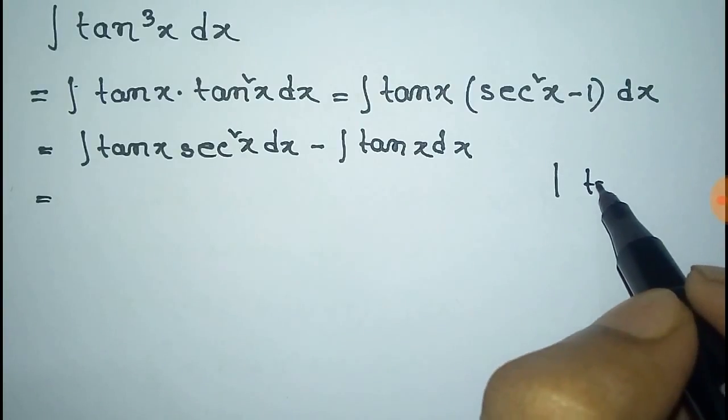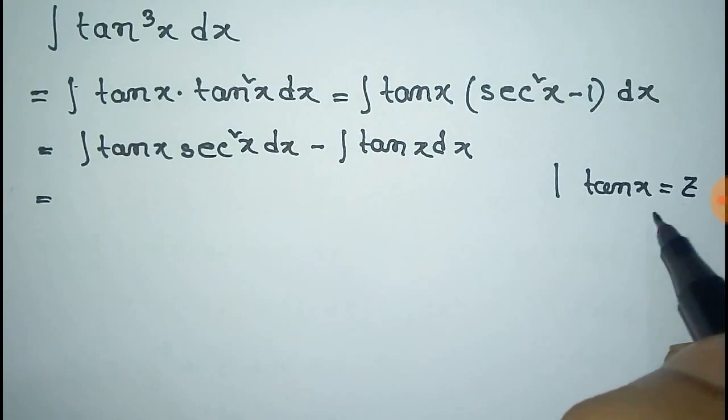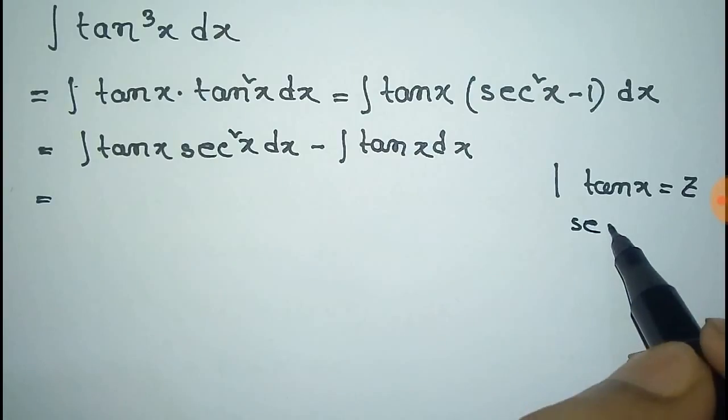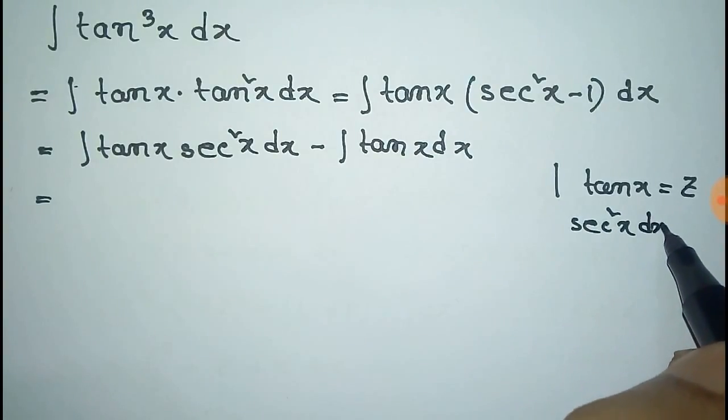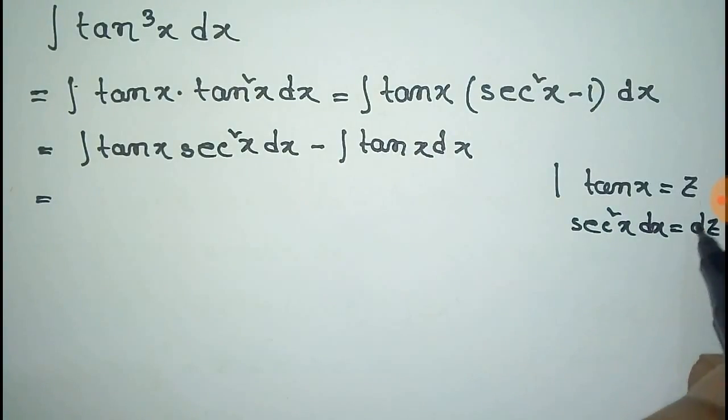Now we take that tanx is equal to z. So the derivative of tanx is sec²x dx, that's equal to derivative of z, that's dz.